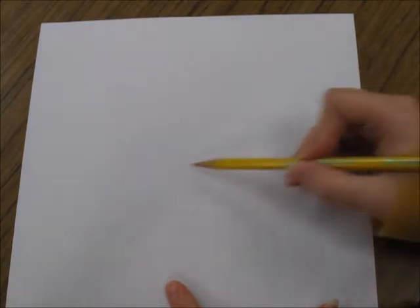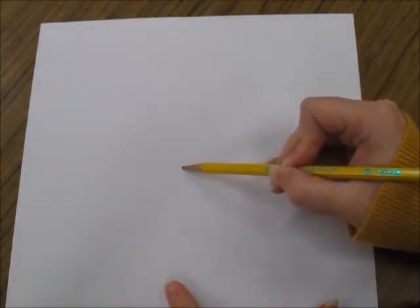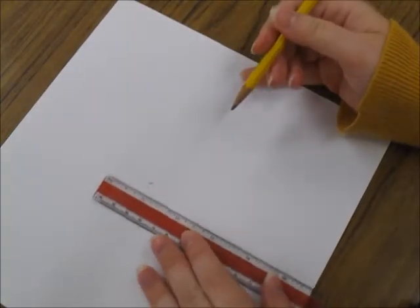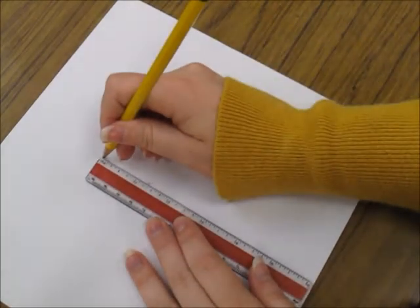When you get your final paper it'll be a much bigger square. You may need a larger ruler to get your straight lines all the way across. If you're not comfortable with a larger ruler you can use a small one, you just need to slide it.